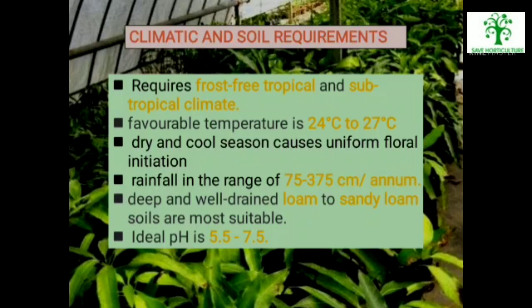Mango varieties usually thrive well in places with rainfall in the range of 75 to 375 cm per annum with a dry season. Mango has been found to grow well on a wide range of soils; however, deep and well-drained loam to sandy loam soils are more suitable. Heavy black soil, alkaline and waterlogged soils should be avoided. The ideal range of soil pH for mango cultivation is 5.5 to 7.5.